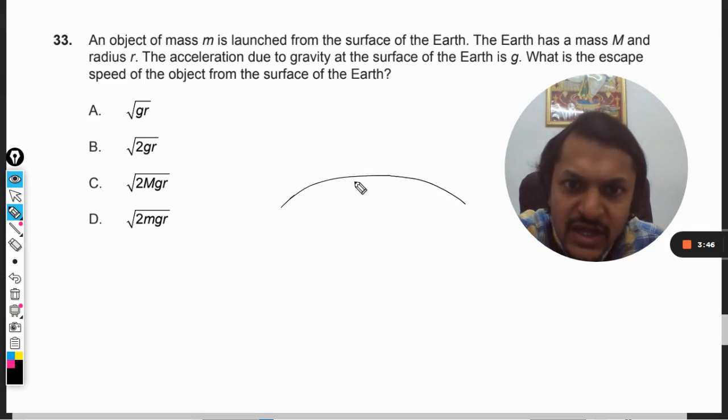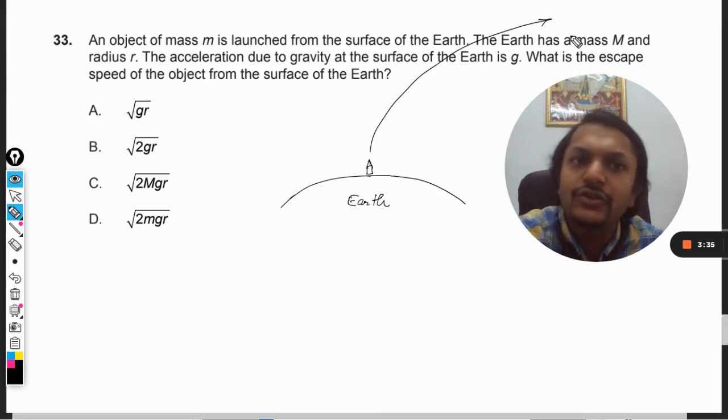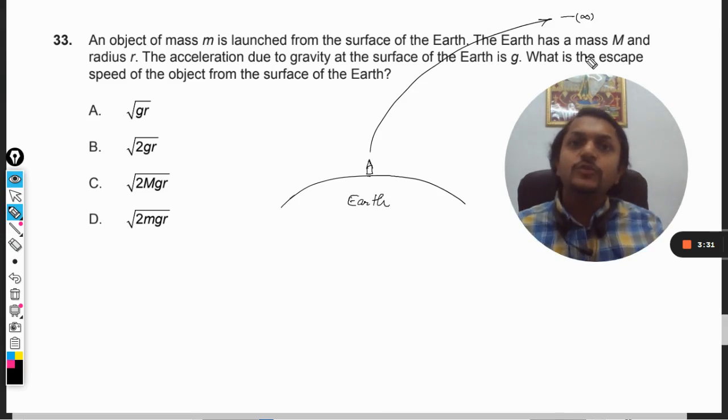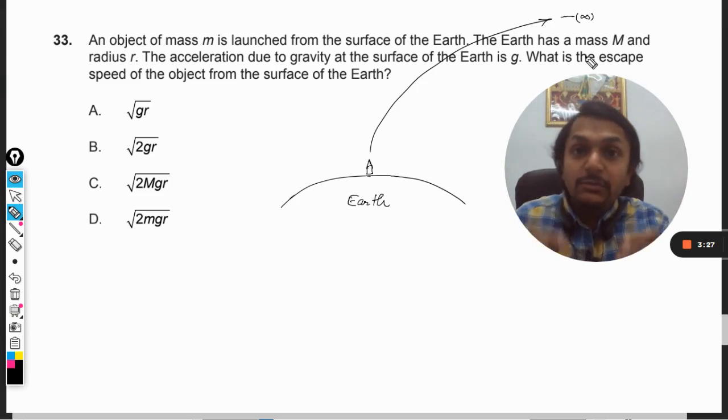What is happening here is, let us say this is the Earth and a body is here, or I can say a rocket is here. Now when this rocket moves to the outer space and it goes to, let us say, infinite distance.